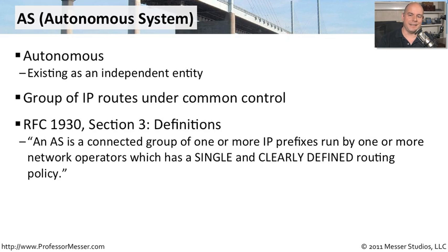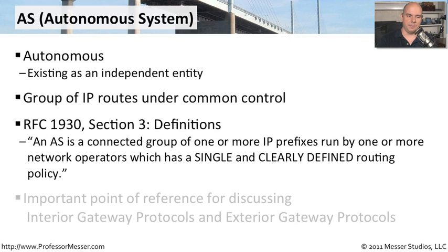If you look at RFC 1930, there's a section three for definitions. An autonomous system is a connected group of one or more IP prefixes run by one or more network operators, which has a single and clearly defined routing policy. That makes sense — if you're running the network for a particular organization, you consider all of the networks under your control as a single autonomous system.